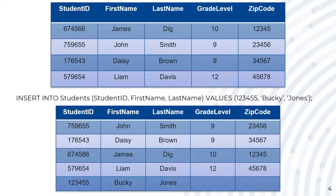Let's say the school got a transfer student from a different country and they needed to test him before solidifying his grade level. Also, let's say he isn't in the US yet. In this case, he wouldn't have a grade level or a zip code. If the school still wanted to add him to the database, they would do so using this kind of INSERT statement.